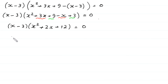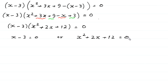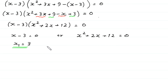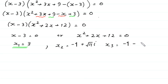From here, x minus 3 equals 0 or x squared plus 2x plus 12 equals 0. From the first, x equals 3. This is the first value of x. We have already solved this quadratic equation, and the solutions are x₂ equals negative 2 plus square root of 11 times i, and x₃ equals negative 2 minus square root of 11 times i. So these are the three solutions of this equation.